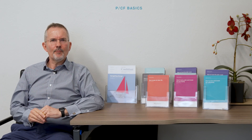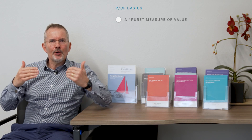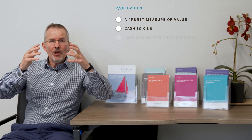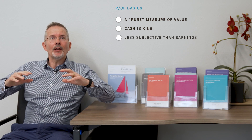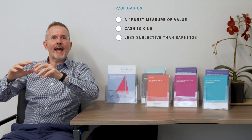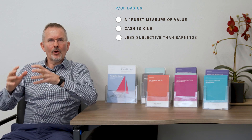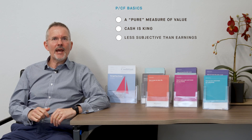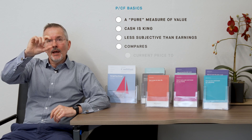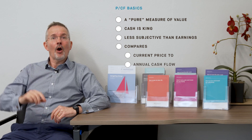Cash flow is seen by many analysts as the purest measure of value. Cash is king is the old cliche, and that's because you can't argue with cash, goes the saying. A PE ratio reflects subjective earnings in some way. Price to book ratios reflect balance sheets that may have valuation missing. But cash flow is a pure measure of value — you've either got it or you haven't. So the argument goes that it's less subjective than earnings. What we're going to do is compare the current share price to some kind of cash flow metric to get a feel as to whether the company is cheap or expensive on a multiple basis.